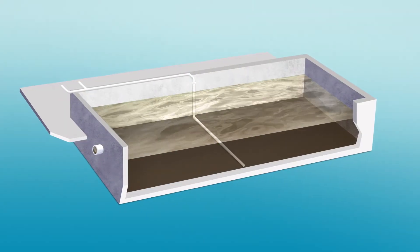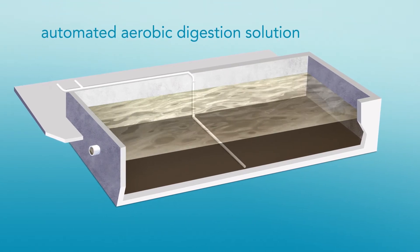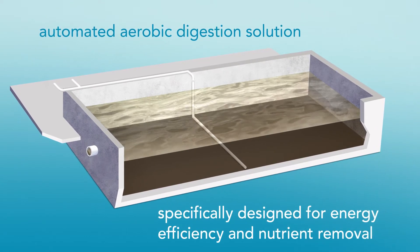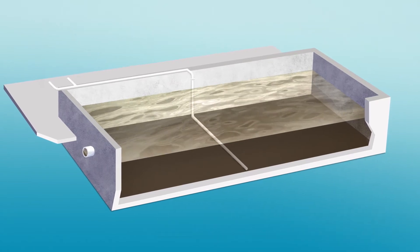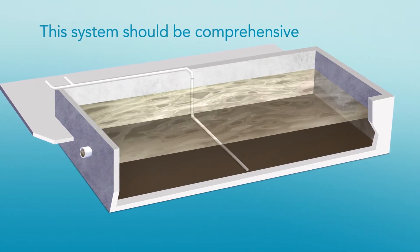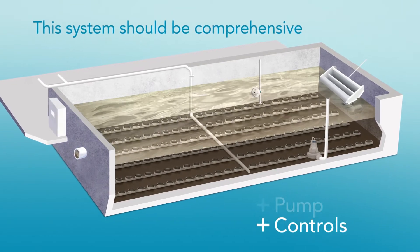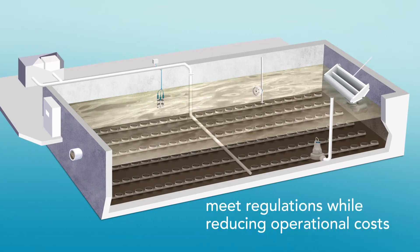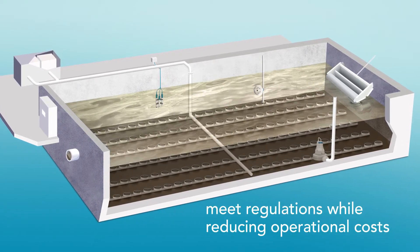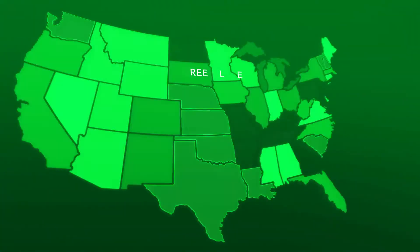Optimizing your biosolids management to avoid these shortcomings requires an automated aerobic digestion solution specifically designed for energy efficiency and nutrient removal. This system should be comprehensive, including aeration, decanter, mixer, pump, controls, instrumentation, and blower to help you meet effluent and biosolids regulations while reducing operational costs.